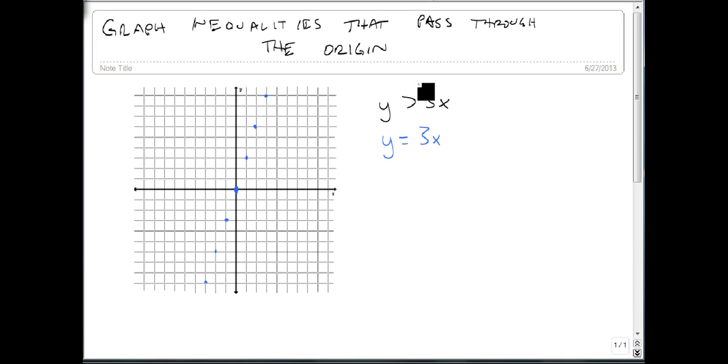And then when we decide to graph, we do the same thing as before. We look at our inequality, recognize it as a strictly greater than, which is a dashed line.